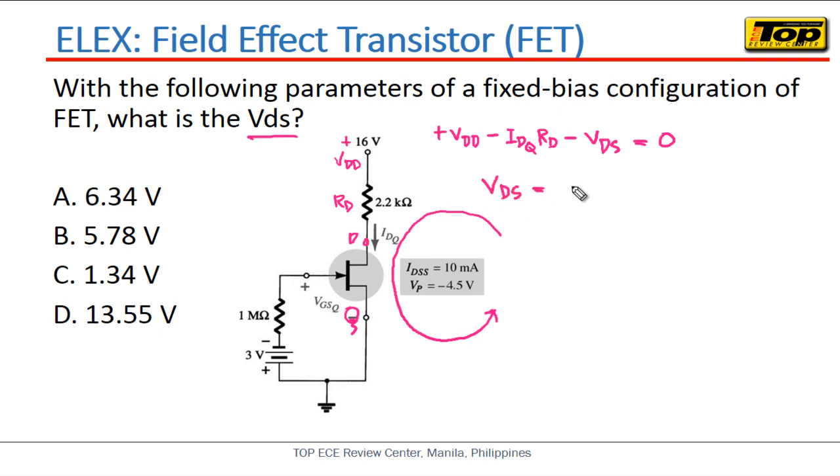Now getting the value of the VDS, this will give us positive VDD minus IDQ multiplied by RD. So ito yung equation na gagamitin natin: VDS equals VDD minus IDQ multiplied by RD.